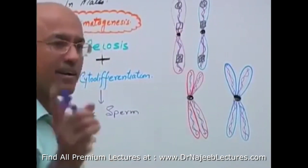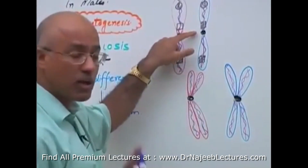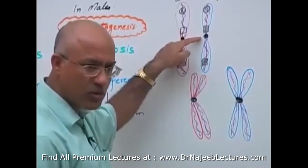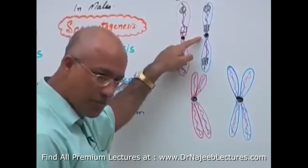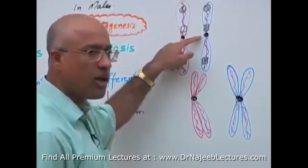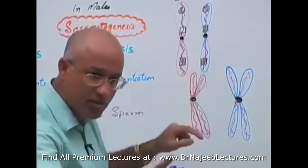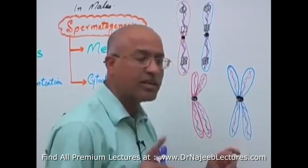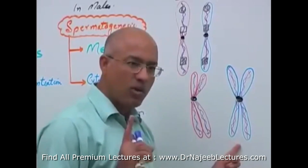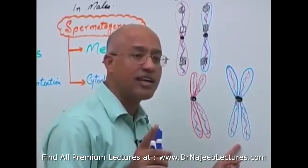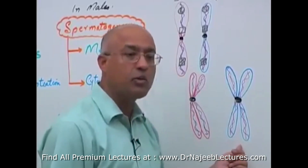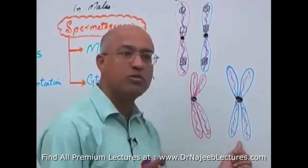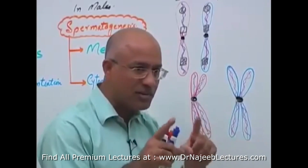To recap: when one chromosome has one centromere, one short arm, and one long arm, we call it an unduplicated chromosome, or a chromosome without replication, or a single structured chromosome, or a chromosome with one chromatid. But if the DNA of the chromosome has been replicated, it is still one chromosome — we call it one chromosome with replicated DNA, or a duplicated chromosome, or a double structured chromosome, or a chromosome with two chromatids.